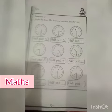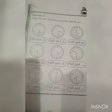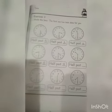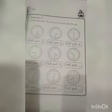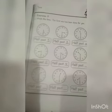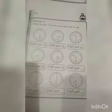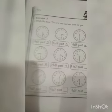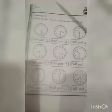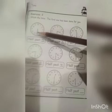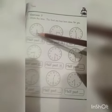Asalaamu alaikum class, hopefully you are fine. This is your maths class, I'm your maths teacher. Today our topic is about half past for Grade 1 class. A clock has 12 numbers. The big hand shows minutes and the small hand shows hours.